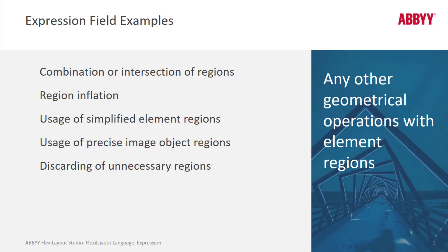At this point we're all accustomed to going to a block, looking at the properties of that block, and specifying a region assignment using the GUI interface — typically clicking the source element radio button and selecting from a drop list which element in your element tree should be mapped to that block. But we can also use an expression, and with script we can do different things such as simplify regions, inflate regions, discard unnecessary regions, and combine regions.